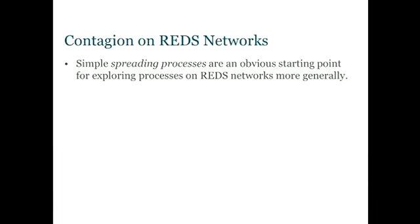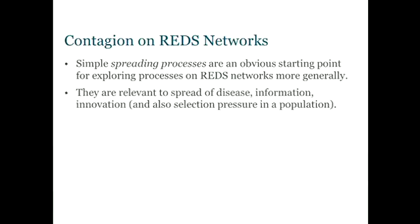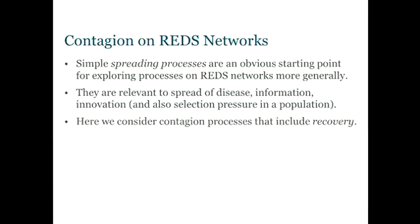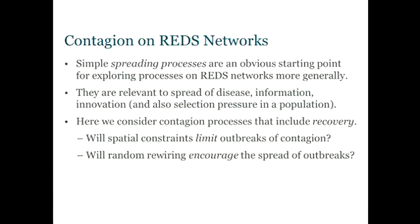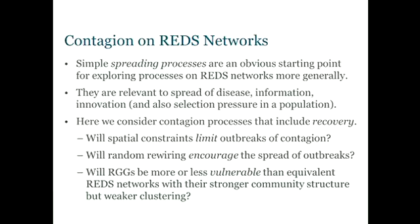What's interesting is, what does this structure do for processes on these networks? What I really care about is, what kind of processes arise on networks with this kind of special REDS structure? And the simplest process maybe to look at is some kind of contagion spreading on the network. So they're a nice starting point. There's an analog of the spread of disease, but maybe also the spread of information, rumors, gossip, and maybe the spread of innovation. Some of my co-authors also look at that as a way of measuring the selection pressure in a network. So how quickly could a beneficial mutant variant spread through a population? And here we're going to consider contagion processes that include recovery.